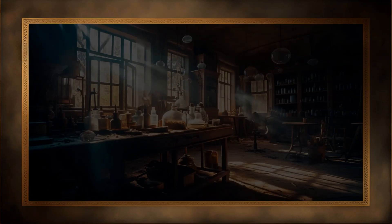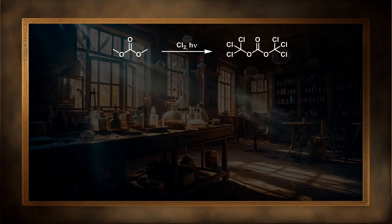Triphosgene was first described in 1888 when it was produced by the photochlorination of dimethyl carbonate, a method still used for its production today. It then remained relatively unknown until the 1980s, where it started being used as a substitute for phosgene.